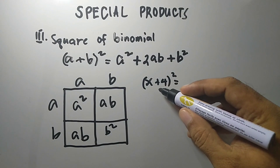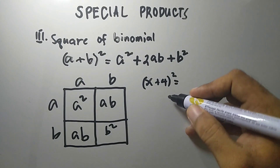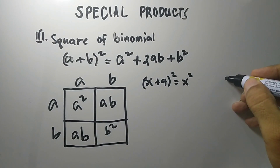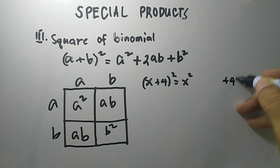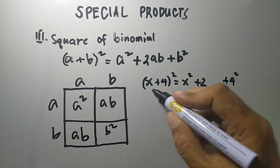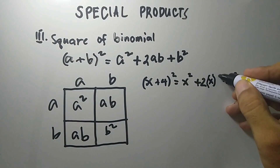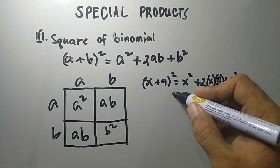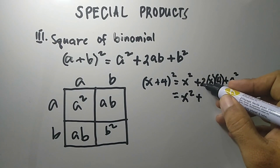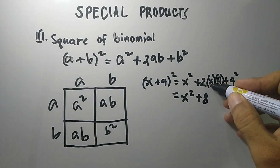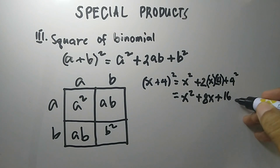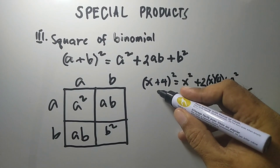Let's have an example: the square of x plus 4. The rule says that you have to square the first and the last term, so you have x squared plus 4 squared. To get the middle term, you get twice the product of the first and the last: 2 times x times 4. The final answer is x squared plus 8x plus 16. That's our product of the square of the binomial x plus 4.